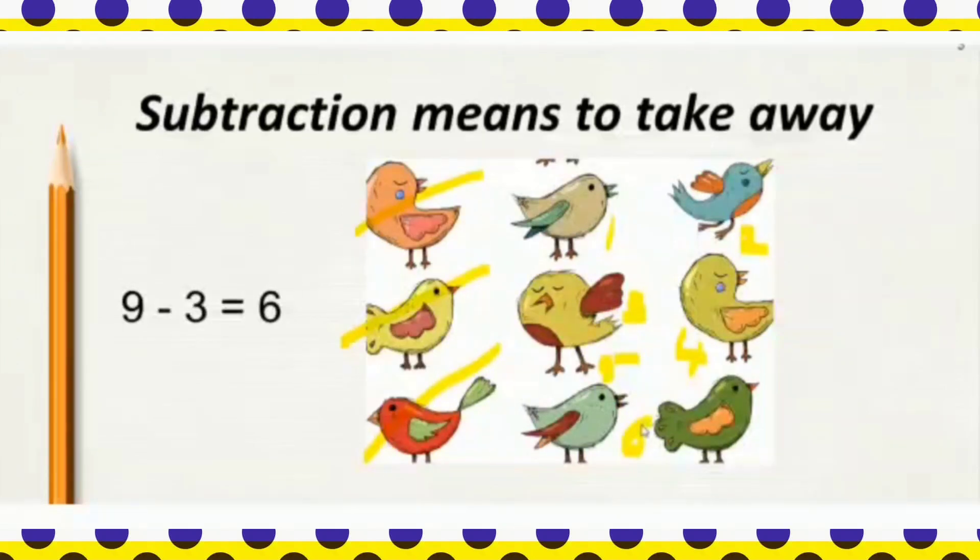9 minus 3 equals 6. Whenever we are doing subtraction, we use the minus sign to show the subtraction. Here from 9, 3 flew away, so we are subtracting 3 with the minus sign. From 9, 3 is subtracted, so here subtraction sign is used, that is minus to show the subtraction. And the answer we have got is 6. And remember, the answer to a subtraction problem is called difference.